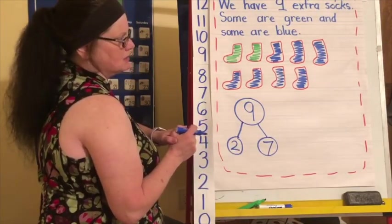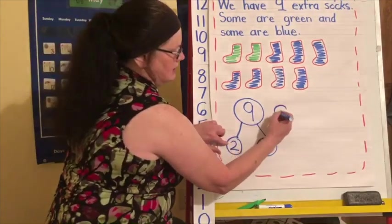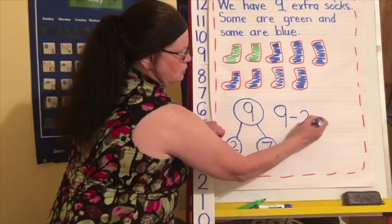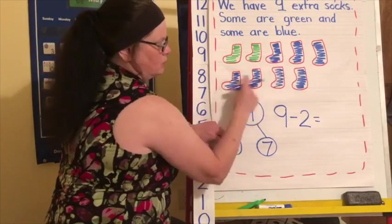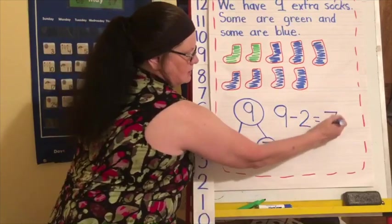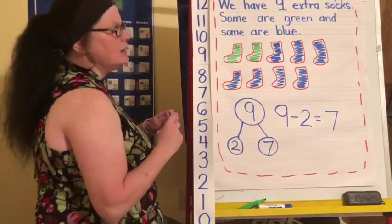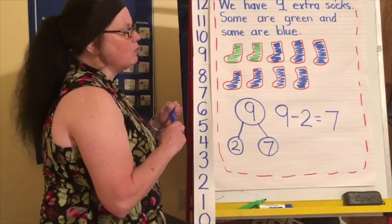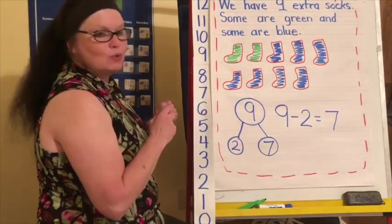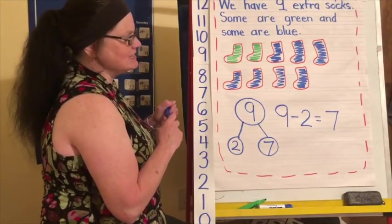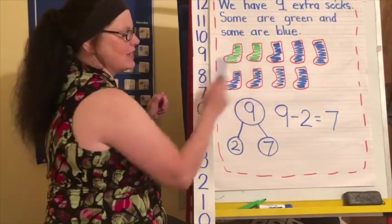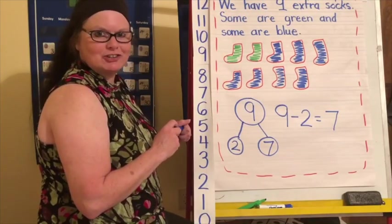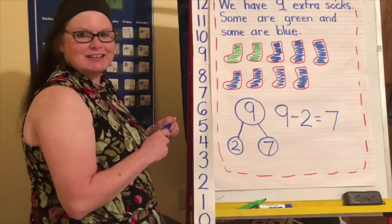Let's write it as a subtraction sentence. I had nine. Two of them minus two were green. How many were blue? One, two, three, four, five, six, seven. Nine minus two equals seven. Now what I would like you to do is on a piece of paper or your dry erase board, I want you to do this problem, but do it a different way. Make your socks different. Don't do two and seven. Pick some different numbers. And then I'd like you to do that and send it to your teacher.